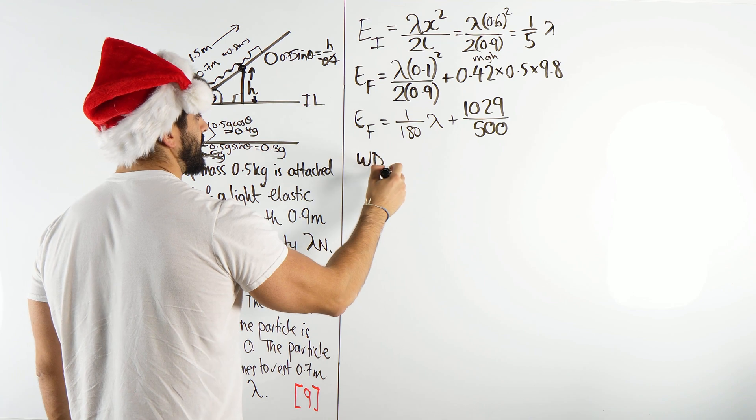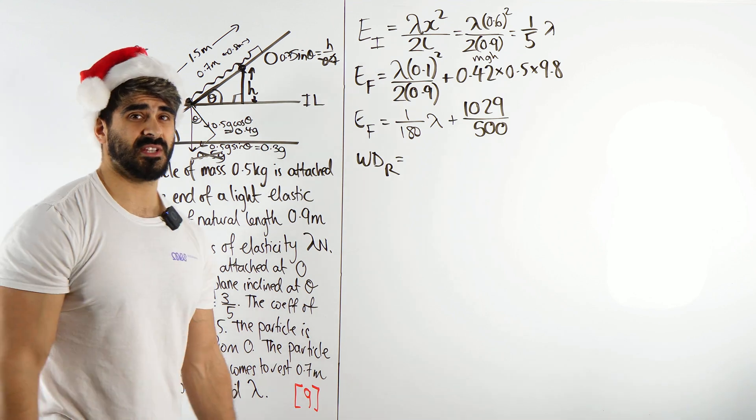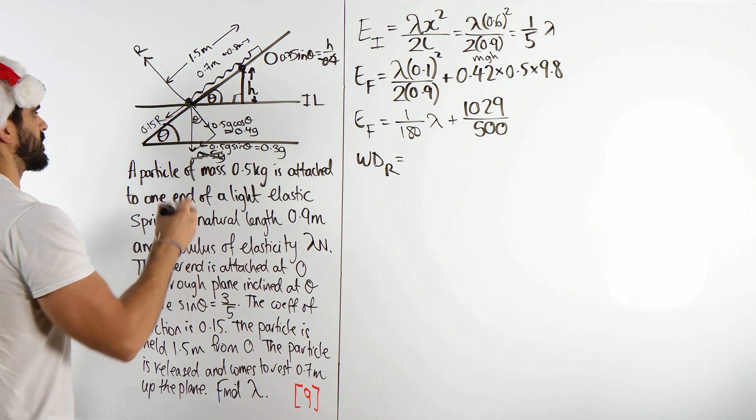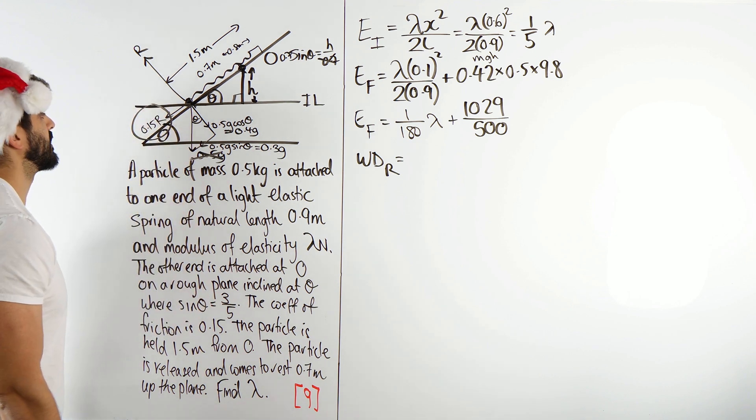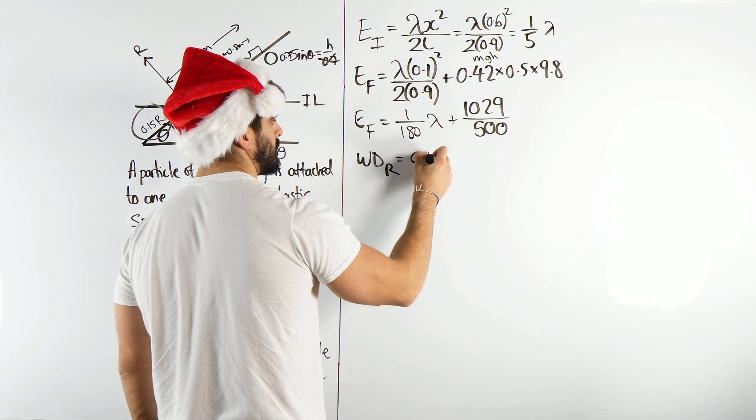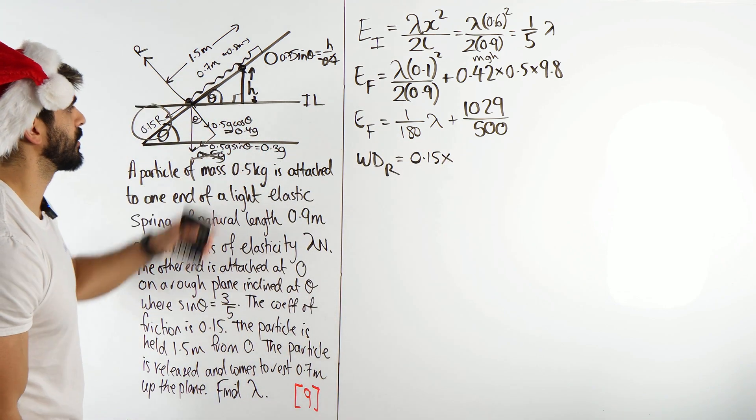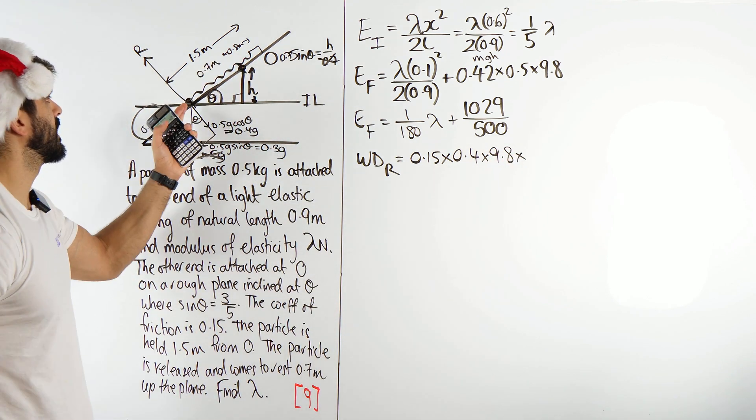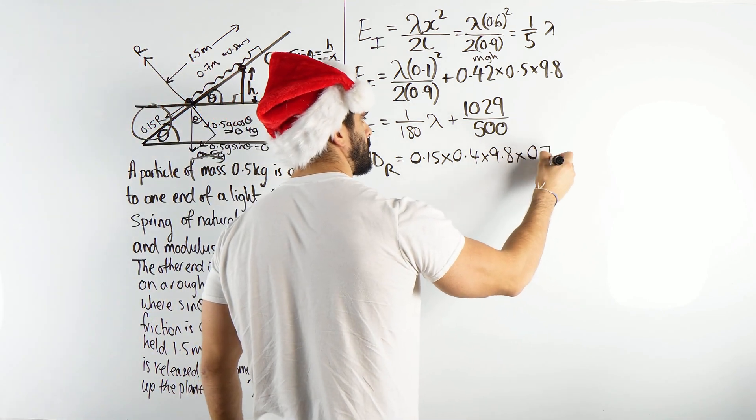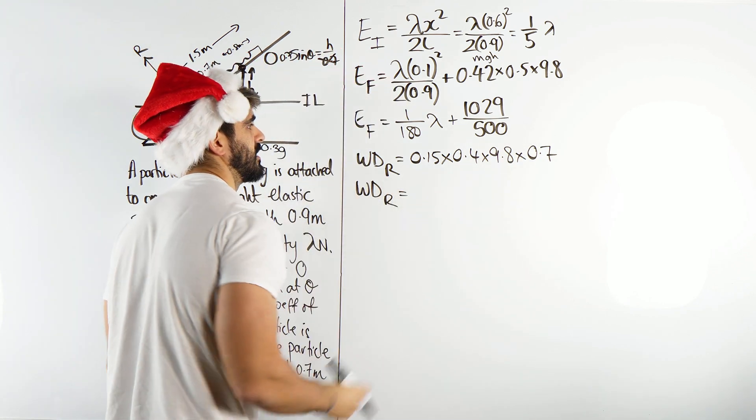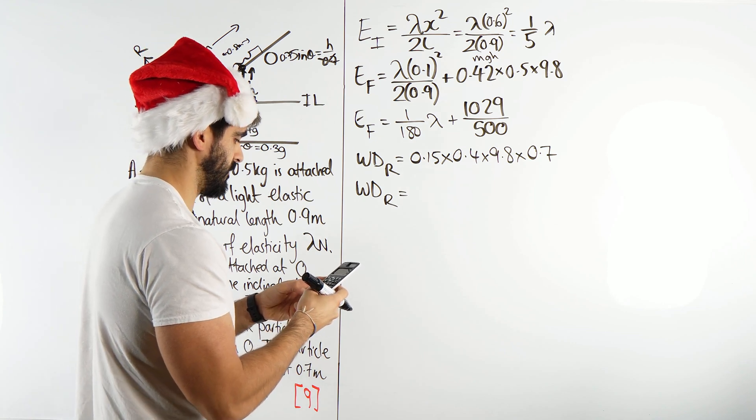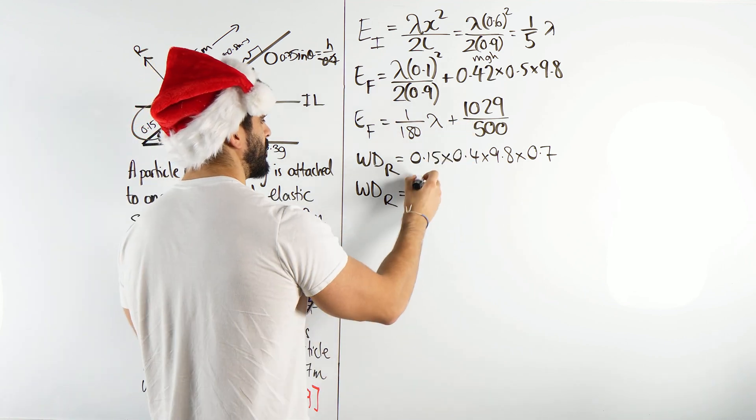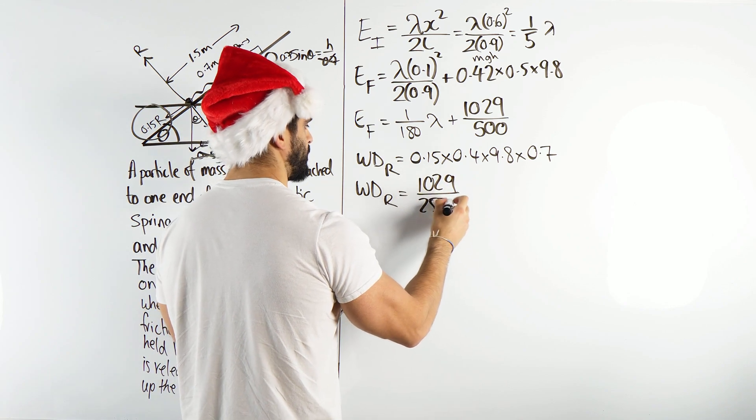Now we have to do the work done against resistance. Work done against resistance is very simple, you're just doing distance times force, force times distance. What is the resistance in this case? The resistance is 0.15 R. So 0.15 times R, which is the reaction force 0.4g, and g is 9.8, times the distance it moved, 0.7 meters. So my work done against resistance is 0.15, 0.4, 9.8, and 0.7, which is 1029 over 2500.